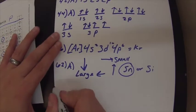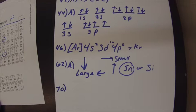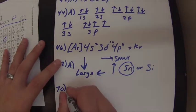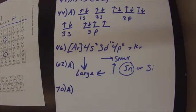Alright, next up is number 70. Number 70 says, which species is larger in each pair? Again, similar, but now it's talking about ions.